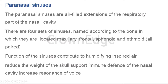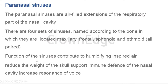The sphenoidal air sinus is present in the sphenoid bone. The frontal sinus is in the frontal bone. The ethmoid has three sets: anterior, middle, and posterior ethmoidal air sinuses. The functions of these air sinuses include humidifying the inspired air, adding resonance to the voice, and reducing the weight of the skull.